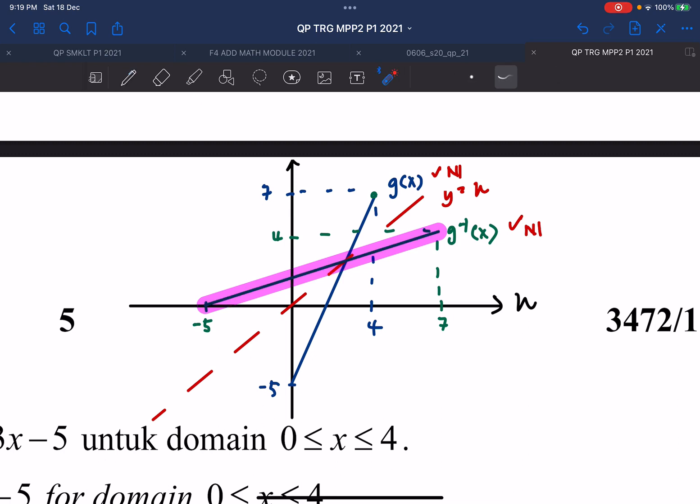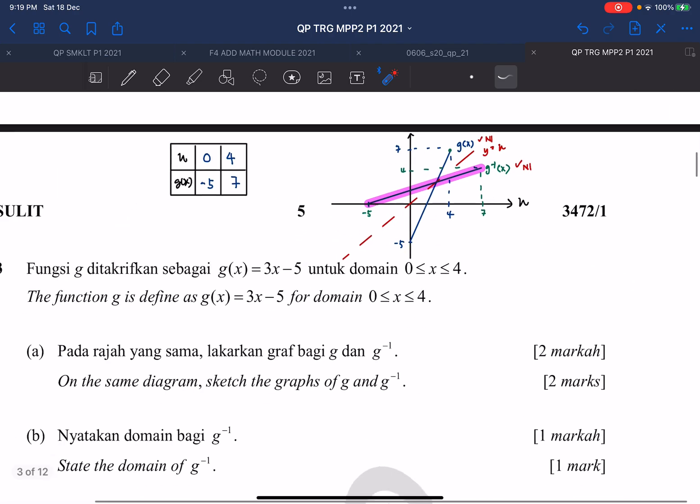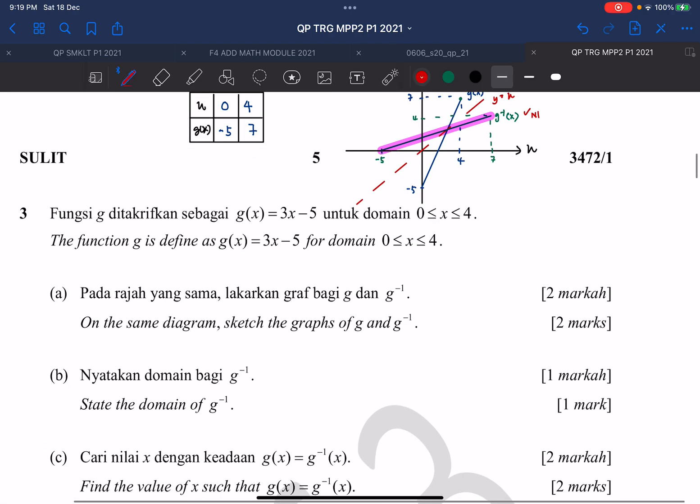The domain will be between negative 5 and 7. So the domain of G inverse actually is between negative 5 and 7. So negative 5, x is between negative 5 and 7. That's the answer. And you obtain 1 mark for this.